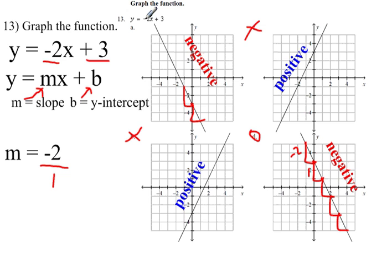So whereas the slope is negative 2 for A and D, the main difference is that the y-intercept is positive 3 for D and it's negative 3 for A. So D is your answer for number 13.